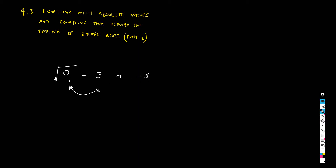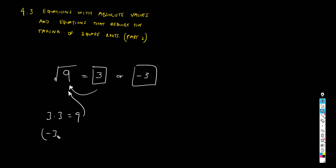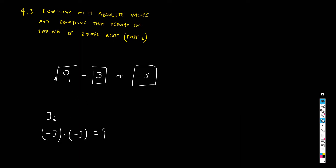Or minus three — we have two possibilities. Three times three gives nine, which is the number inside the radical sign. And minus three times minus three also gives nine. So when you take the square root of any number, you will get two solutions: one positive and one negative. It's the same number, but one is positive and one is negative.